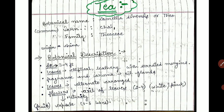Tea originated in China. Its botanical description: the plant has a height of about 3 to 4 feet. The leaves are elliptical with serrated margins. Oil glands are present for fragrance and aroma. The leaves are alternately arranged. Flowers are whitish or pinkish and generally 2 to 4 appear in clusters. The fruits form as capsules at maturity, generally with 1 to 6 lobes.